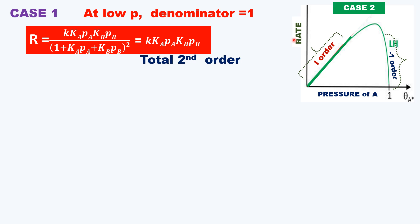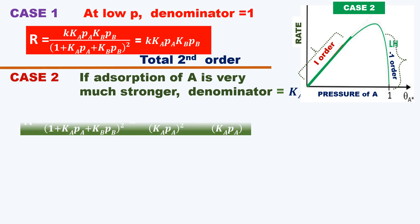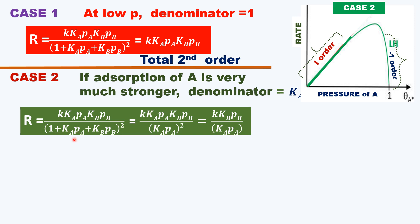Case two: if A is adsorbed more strongly. At low pressure it still follows first order, but when adsorption of A is very strong, KA is dominant in the denominator. The terms for KB·PB become negligible, and the denominator becomes (KA·PA)². On cancelling KA terms, the rate expression shows that the rate is directly proportional to partial pressure of B, and inversely proportional to partial pressure of A — that is, PA to the power of minus 1.